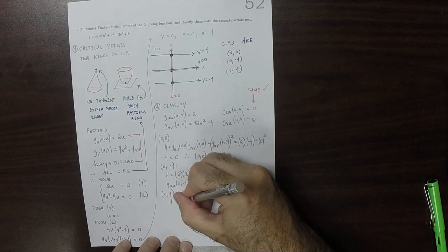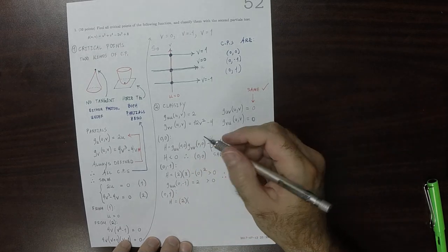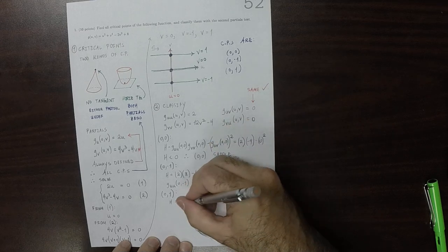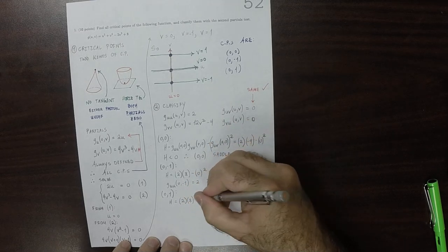The U, U partial is two. The VV partial is, again, eight. The mixed partial is zero. So that's zero.